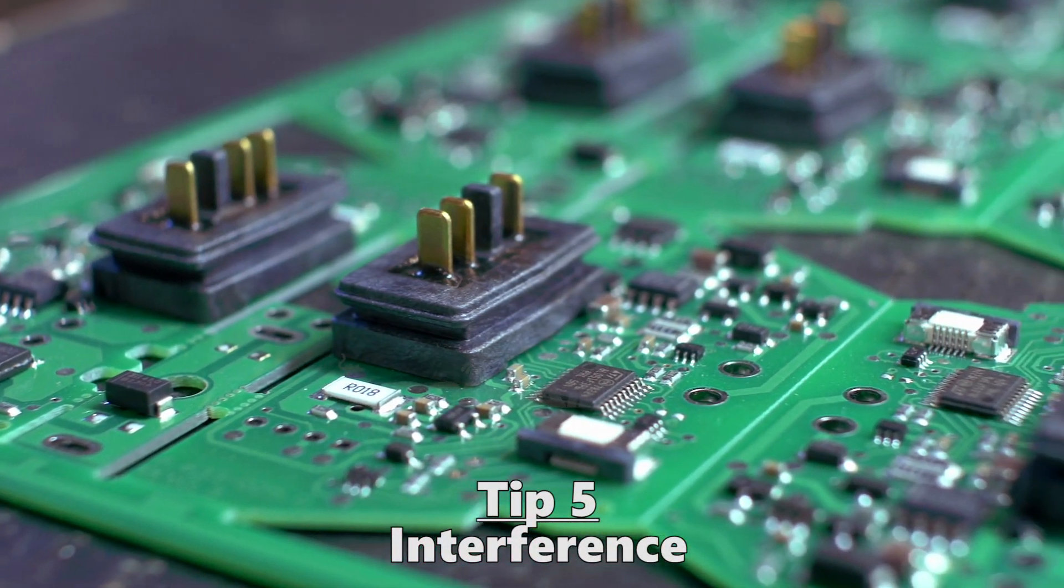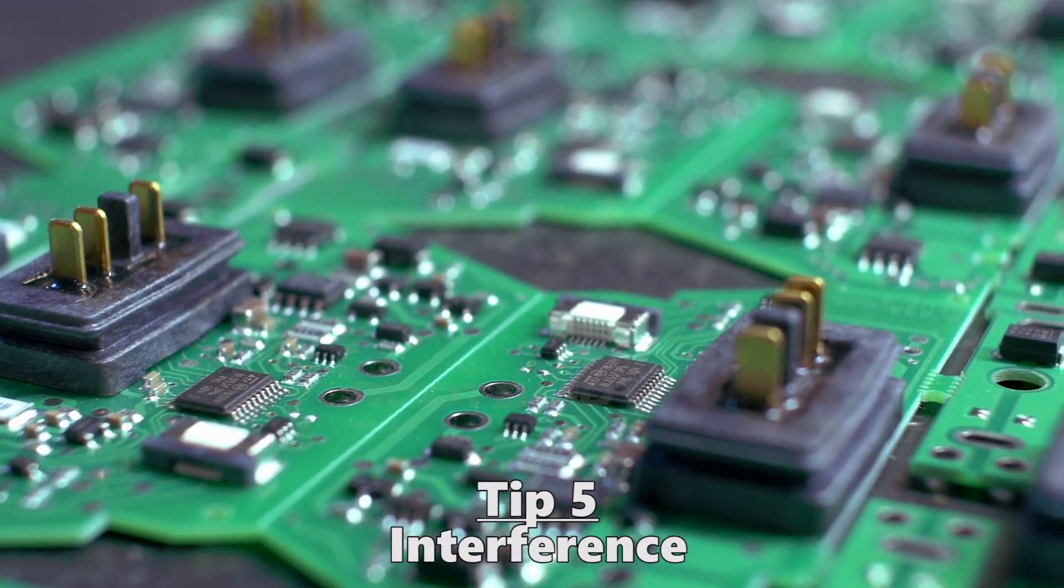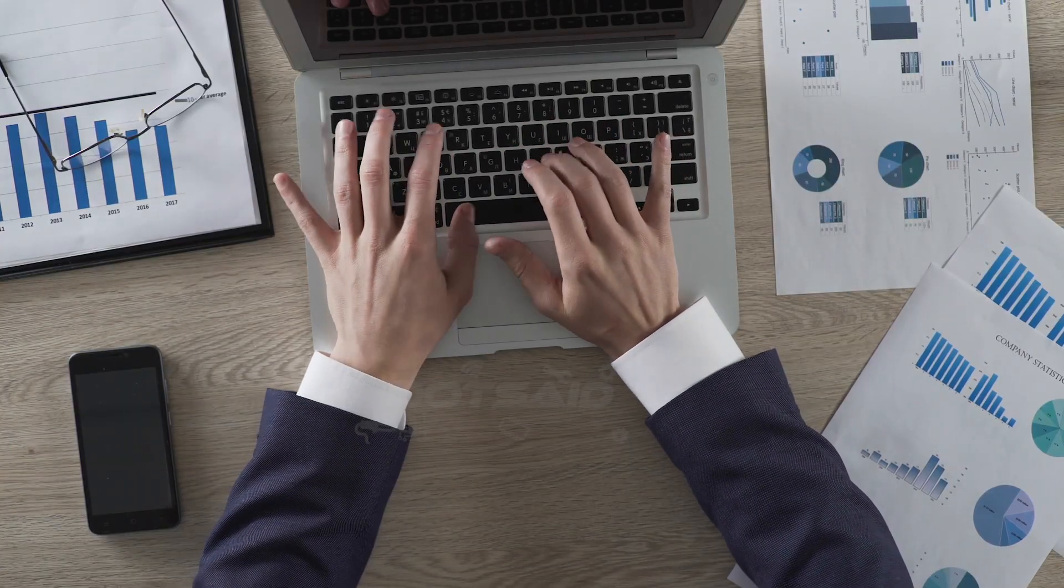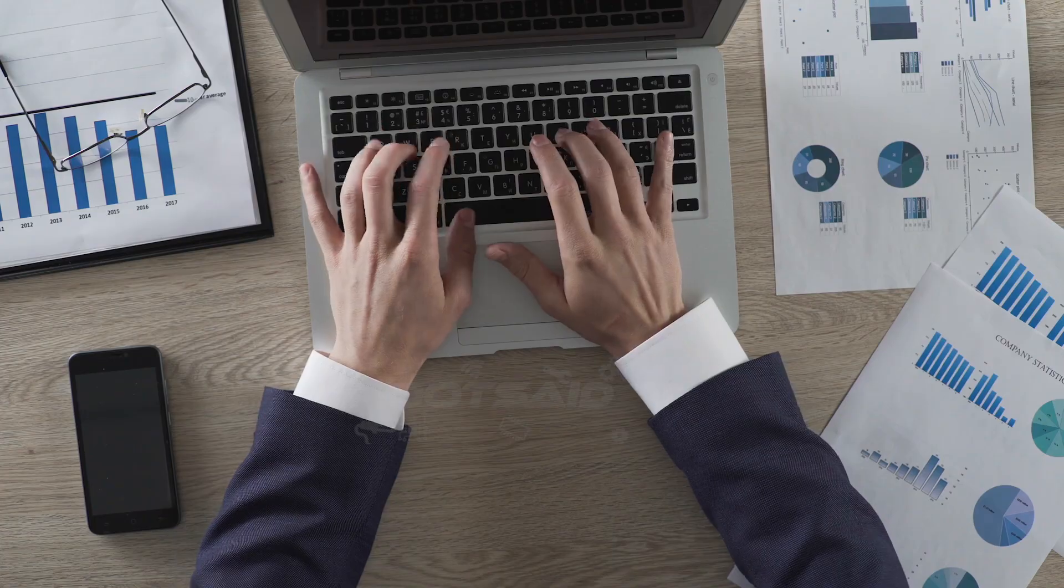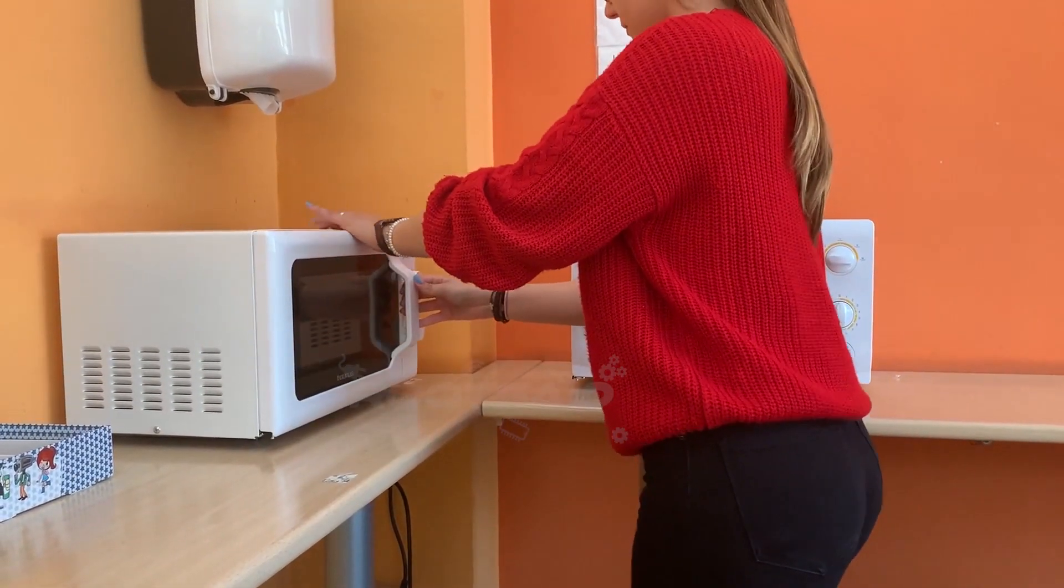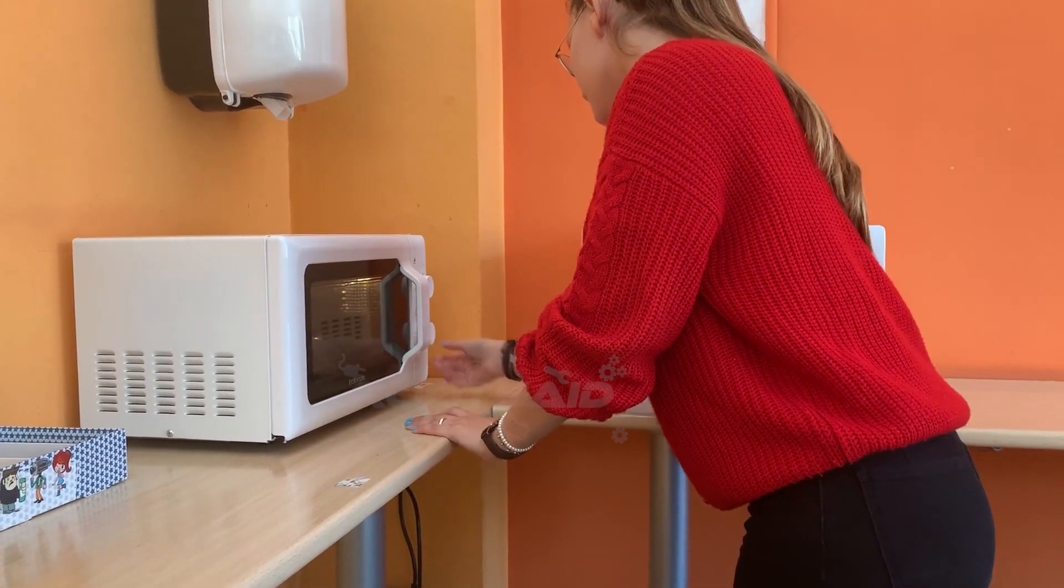Another thing to be taken care of is the electronic devices around the router. A lot of electronic devices can interfere with wifi signal. Things like TV, computers, microwave, pretty much anything that has a motor inside it. So you want to keep the router away from other electronic devices.